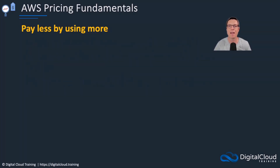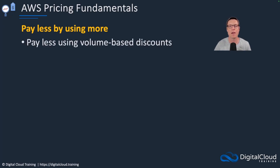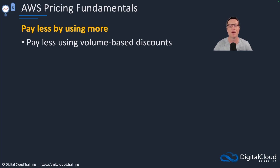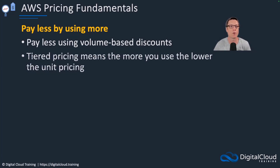There's also the concept of paying less when you use more — volume-based discounts. With Amazon S3, as you add more storage you pay a certain amount per gigabyte, but once you reach a certain threshold, any data above that threshold costs less per gigabyte. Then there's a third threshold, so as you store more and more data, the amount you're paying per unit — per gigabyte — keeps decreasing. That's tiered pricing: the more you use, the lower the unit pricing.